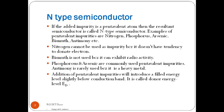In extrinsic semiconductors, based on the kind of impurity added to the pure semiconductor, we may add two types of impurities: 5th group elements and 3rd group elements. When we add 5th group elements to the pure semiconductor, it becomes an N-type semiconductor. When we add 3rd group elements, it becomes a P-type semiconductor. If the added impurity is a pentavalent atom, the resultant semiconductor is called an N-type semiconductor.